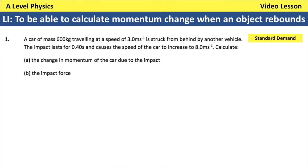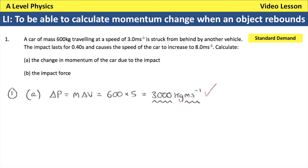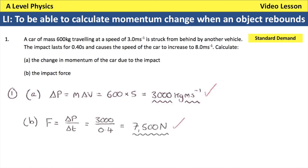Question three: a car of mass 600 kg travelling at 3 m/s is struck from behind, increasing its speed to 8 m/s. The impact lasts 0.4 seconds. Since there is no change in direction, the change in momentum is 600 × (8 − 3) = 600 × 5 = 3000 kg·m/s. The impact force is 3000 ÷ 0.4 = 7500 newtons.